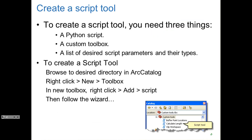To create a script tool, you need three things. You need a Python script — that'll be what the script tool is pointing to. You need a custom toolbox; there are built-in toolboxes, but you can also make your own. And then you need to plan your shopping list: what do you want to get from the user? That's your list of desired script parameters.